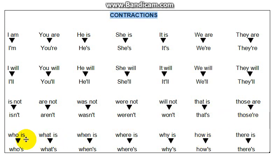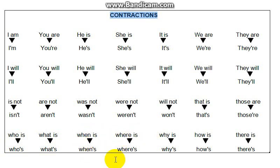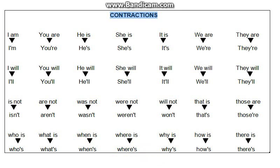You also have question word contractions. 'Who is' becomes 'who's,' as in 'whose book is this?' 'What is' becomes 'what's.' 'When is' becomes 'when's.' 'Where is' becomes 'where's.' 'Why is' becomes 'why's.' 'How is' becomes 'how's.' And 'there is' becomes 'there's.' These are shorter forms you can write for these words.